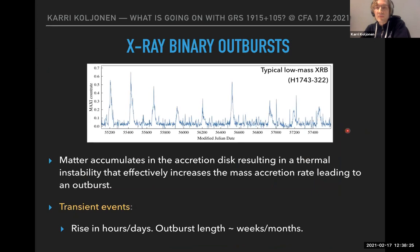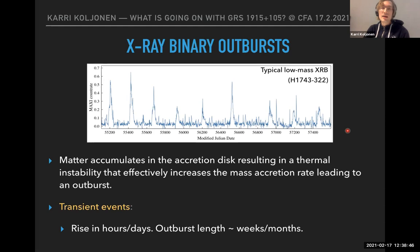Here is an X-ray light curve of a typical low-mass X-ray binary, XTE J1743-322, where we see that outbursts are transient events. They typically rise in hours or days and last a few weeks or a few months. But GS 1915 is a different kind of beast.